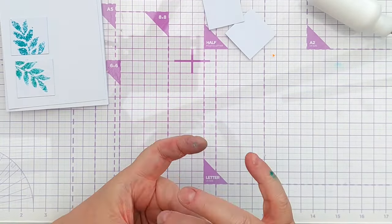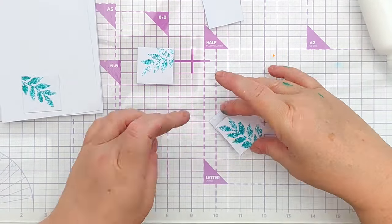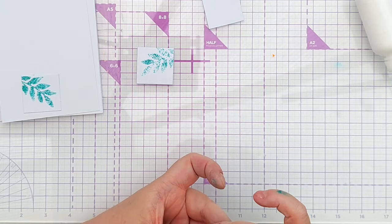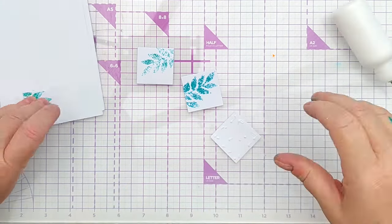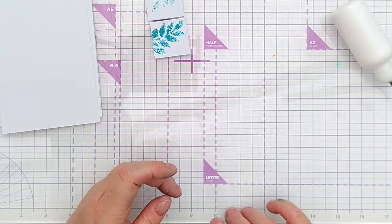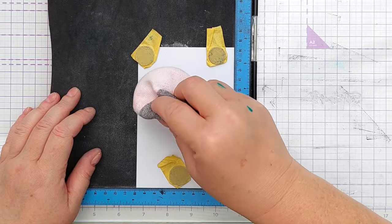Then I stuck these on the card but before I did I chose my sentiment which says thinking of you and I placed it about a third of the way down on the left hand side because I wanted it to be between the top and the middle squares. You'll see what I mean when I construct everything.